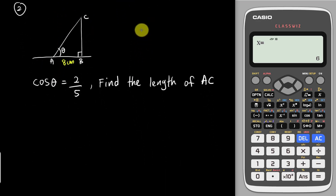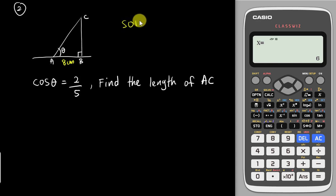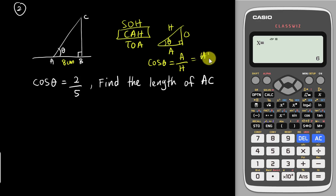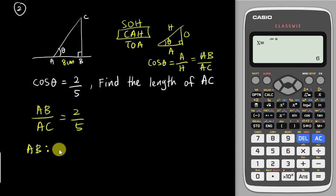The last example is trigonometry. In trigonometry we also use ratios. The question states cos θ = 2/5 and asks you to find the length of AC. Using SOH-CAH-TOA, cos equals adjacent over hypotenuse. So with theta at the angle, the adjacent side AB over hypotenuse AC equals 2/5. Therefore AB:AC = 2:5.